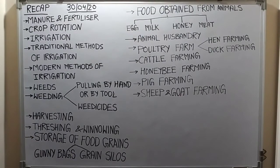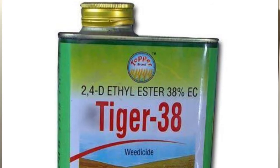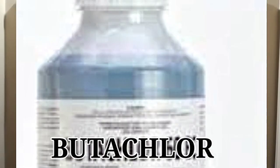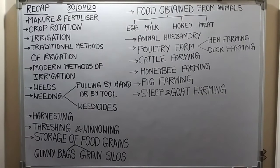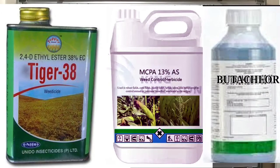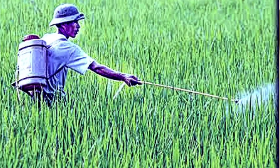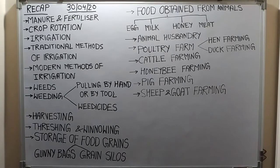Weeds can also be removed by spraying special chemicals called weedicides, such as 2,4-D, MCPA, and butachlor. The weedicide solution is sprayed on standing crops in the field with a sprayer to kill the weeds. The important thing is that they only kill the weeds and do not destroy the main crops. As you can see in the pictures, the different examples of weedicides — 2,4-D, MCPA, butachlor — and a farmer spraying weedicide on the weeds.